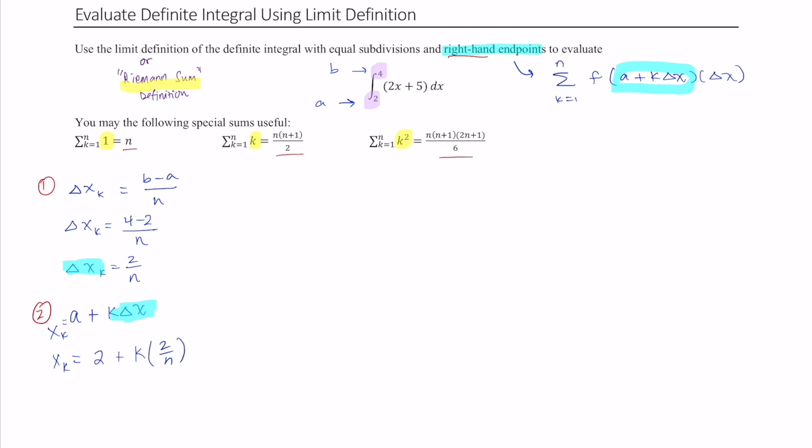So step 3 is for you to begin the Riemann sum process for your function. We're going to have the summation from k equal to 1 of n, and then it's going to be f of 2 plus 2k over n times your delta x, and your delta x is another 2 over n.